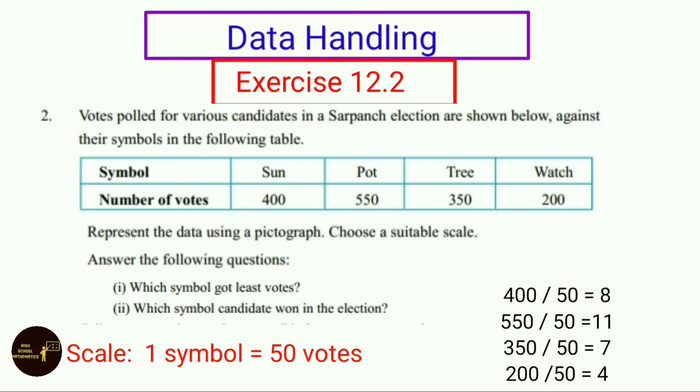Here we have taken scale as 1 symbol equals to 50 votes. Sun symbol had 400 votes, so 400 divided by 50 equals to 8. Next, 550 divided by 50 equals to 11. 350 divided by 50 equals to 7, and 200 divided by 50 equals to 4.